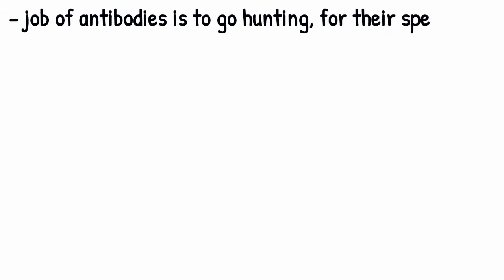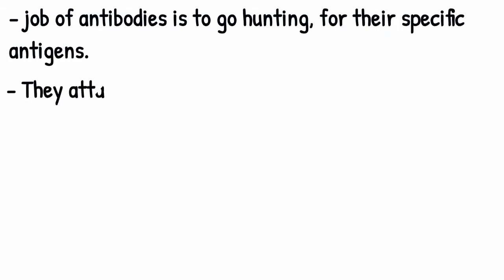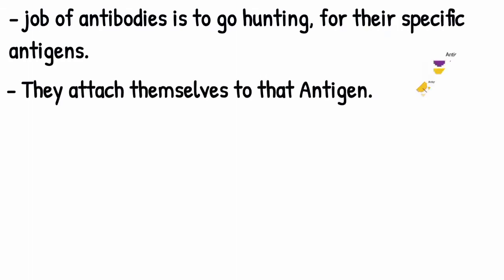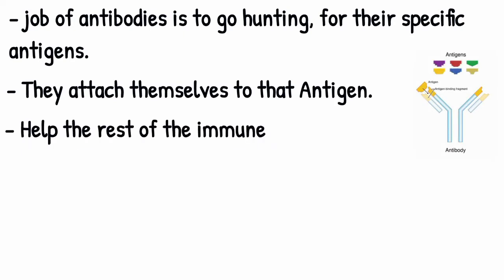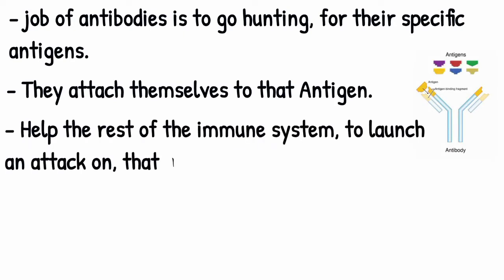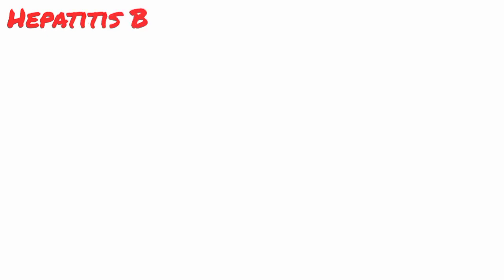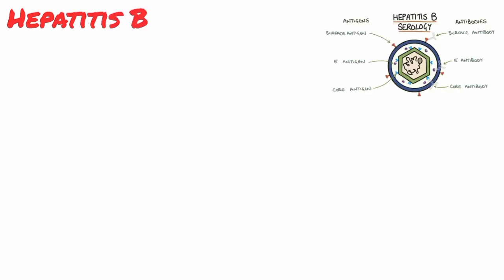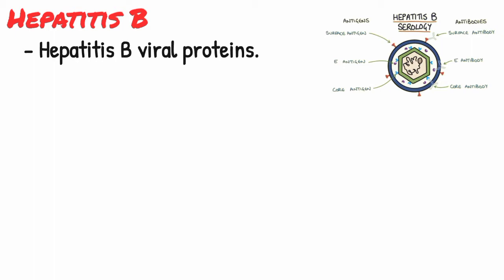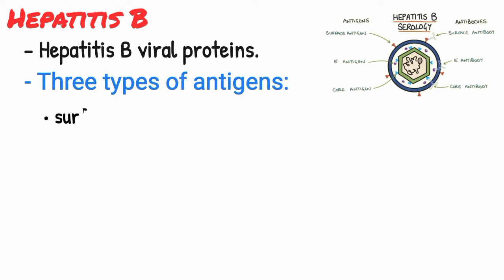The job of antibodies is to go hunting for their specific antigens, and when they find them, they attach themselves to that antigen and help the rest of the immune system to launch an attack on whatever that antigen is, or whatever the antigen is related to. In the case of hepatitis B, there are antigens that are part of the hepatitis B virus, and these are hepatitis B viral proteins.